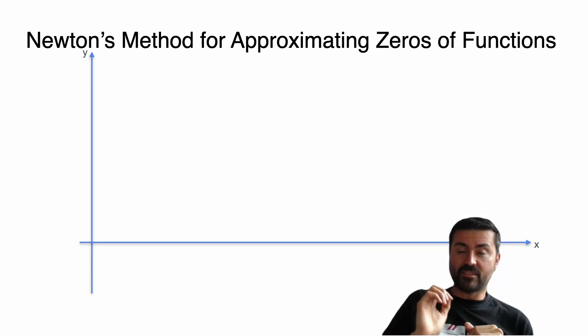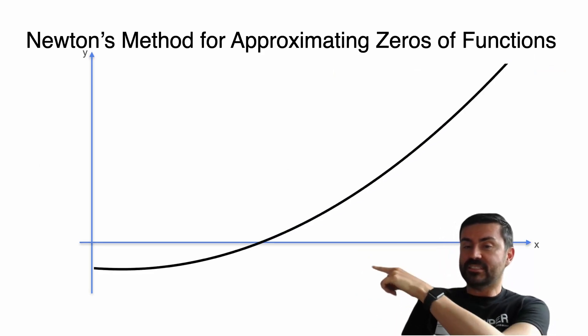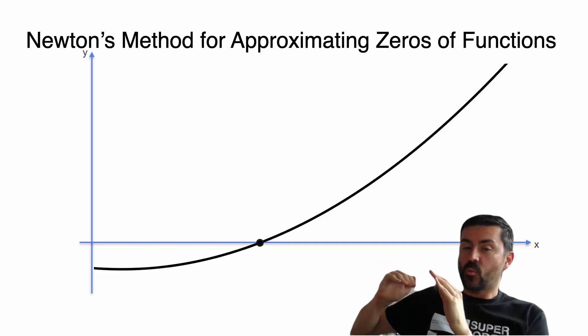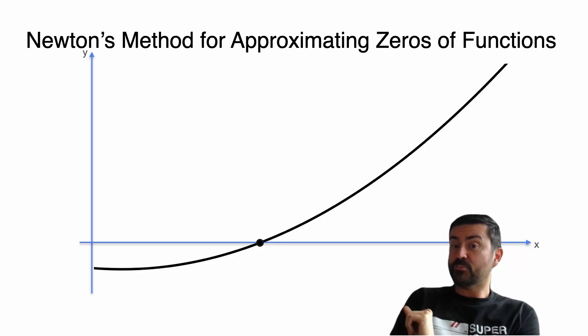So this is how Newton's method works. Newton's method is a method for finding the zero of a function - the zero is this point over here where the function meets the horizontal axis. We're not going to find it exactly, we're going to approximate it. To approximate it, first we pick a random point. That random point is probably not the zero - that's our first try, and we're going to turn that first try into a better try.